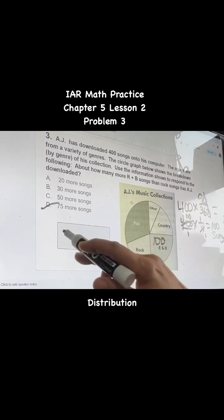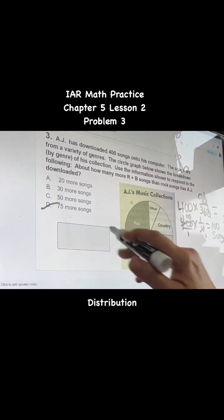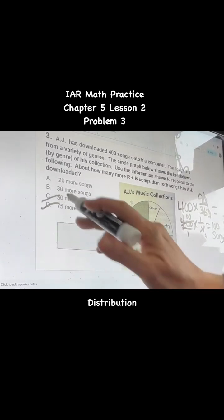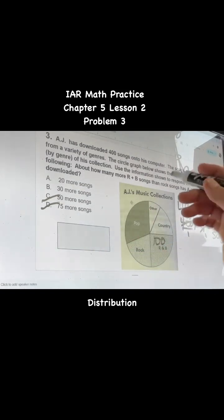I already know, looking at this, it's not going to be 75 more songs than rock. It's not going to be 50. So it's between A and B, just looking at that.